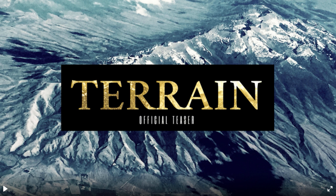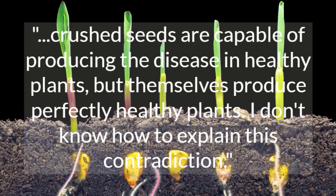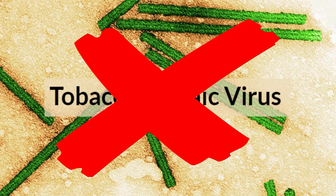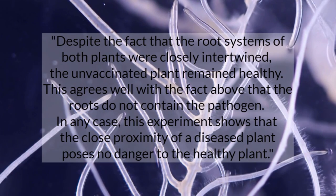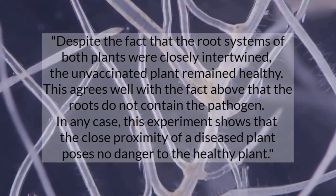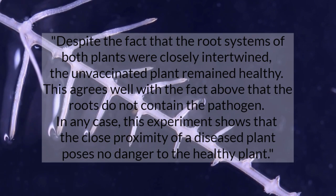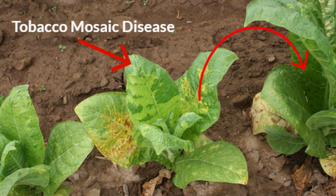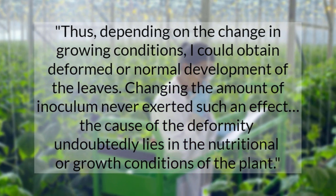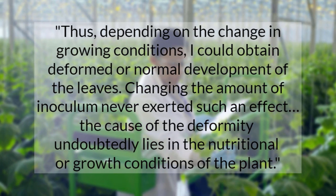So why is the pathogen boogeyman being introduced? He writes that crushed seeds are capable of producing the disease in healthy plants, but themselves produce perfectly healthy plants. He admits: 'I don't know how to explain this contradiction.' Well, it's not a contradiction if there is no virus. He makes the following admission: despite the fact that the root systems of both plants were closely intertwined, the unvaccinated plant remained healthy. This agrees well with the fact that the roots do not contain the pathogen. In any case, this experiment shows that the close proximity of a diseased plant poses no danger to the healthy plant. So how would this be spreading in nature? Changing the growing conditions, he could obtain deformed or normal development of the leaves. Changing the amount of inoculum never exerted such an effect. The cause of the deformity undoubtedly lies in the nutritional or growth conditions of the plant.